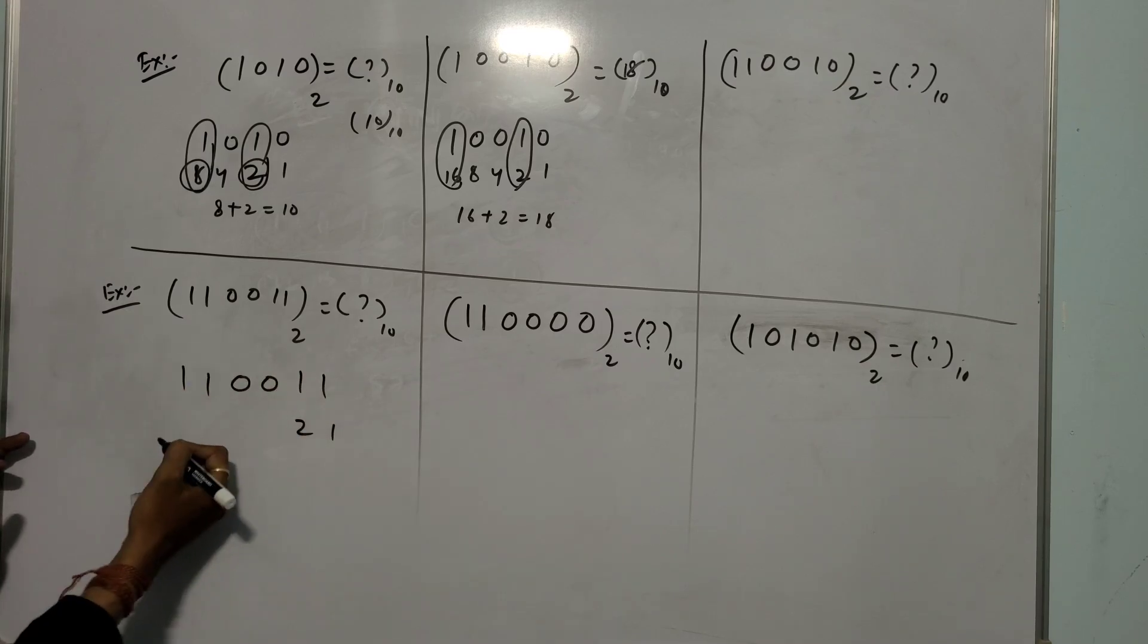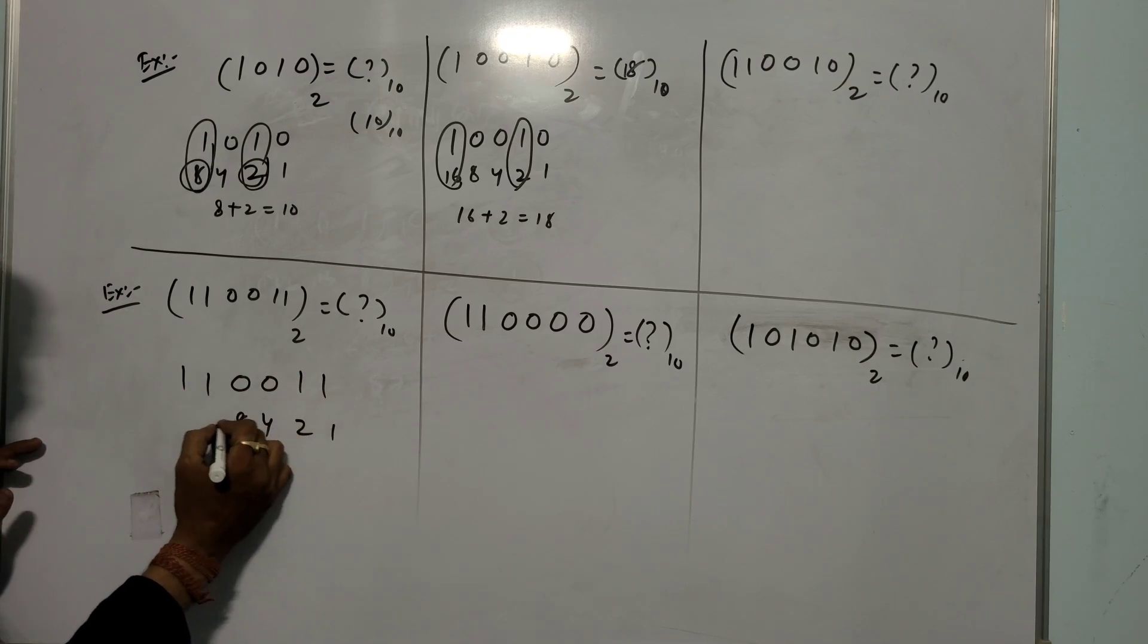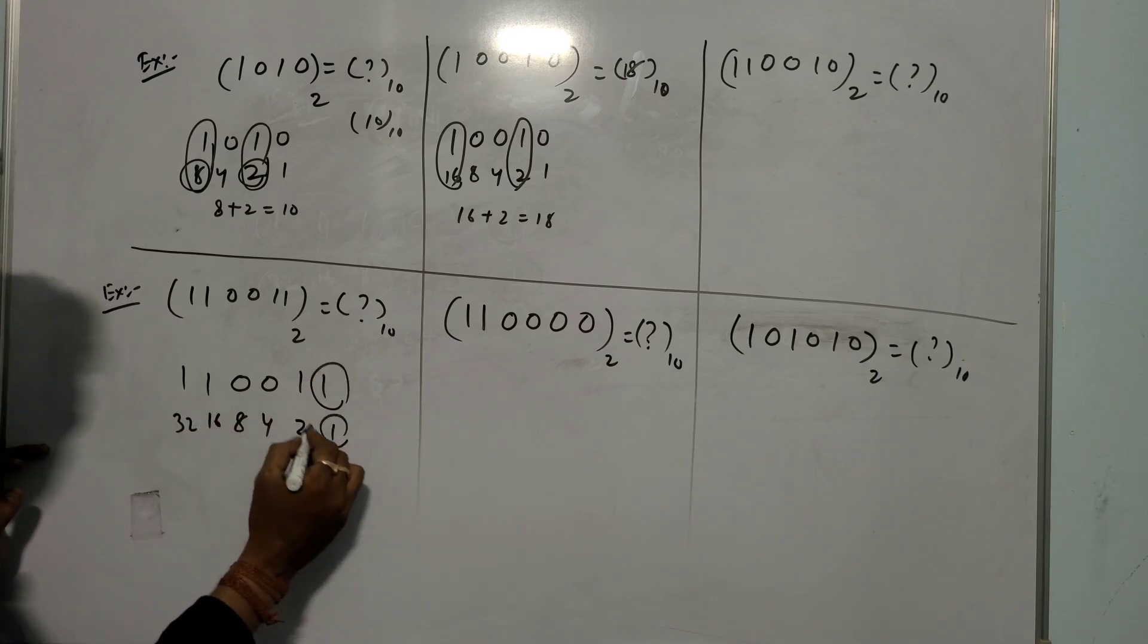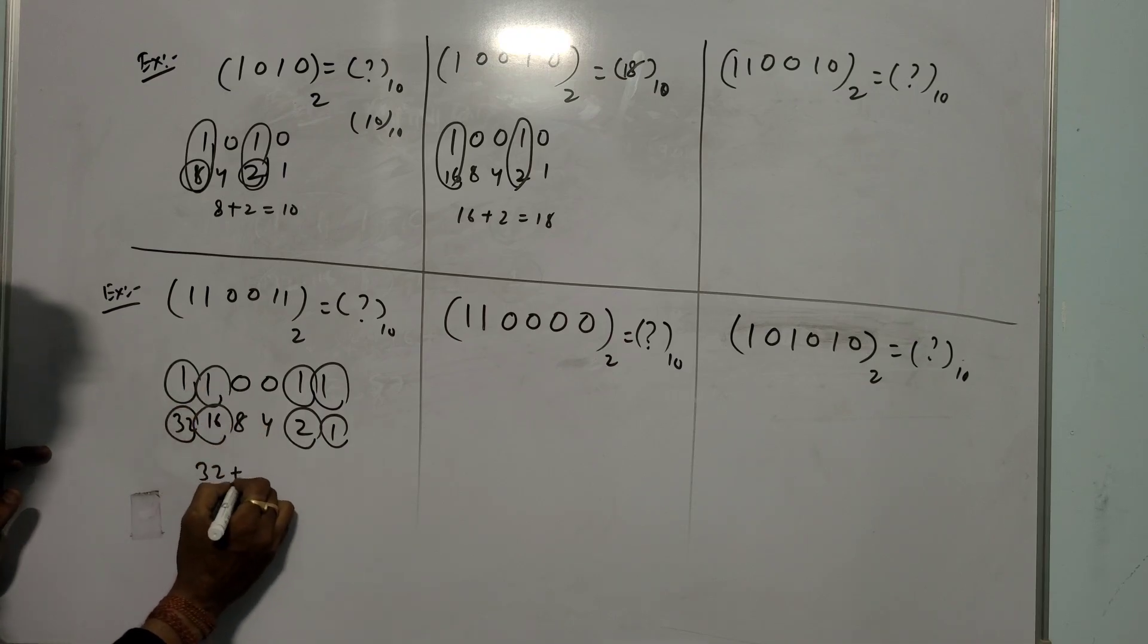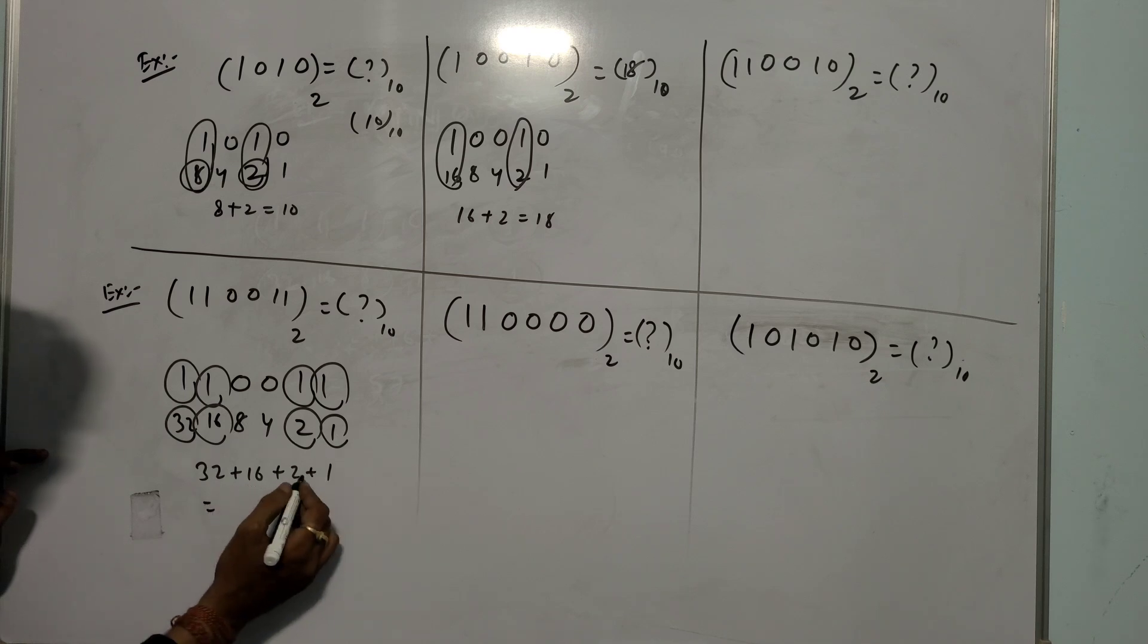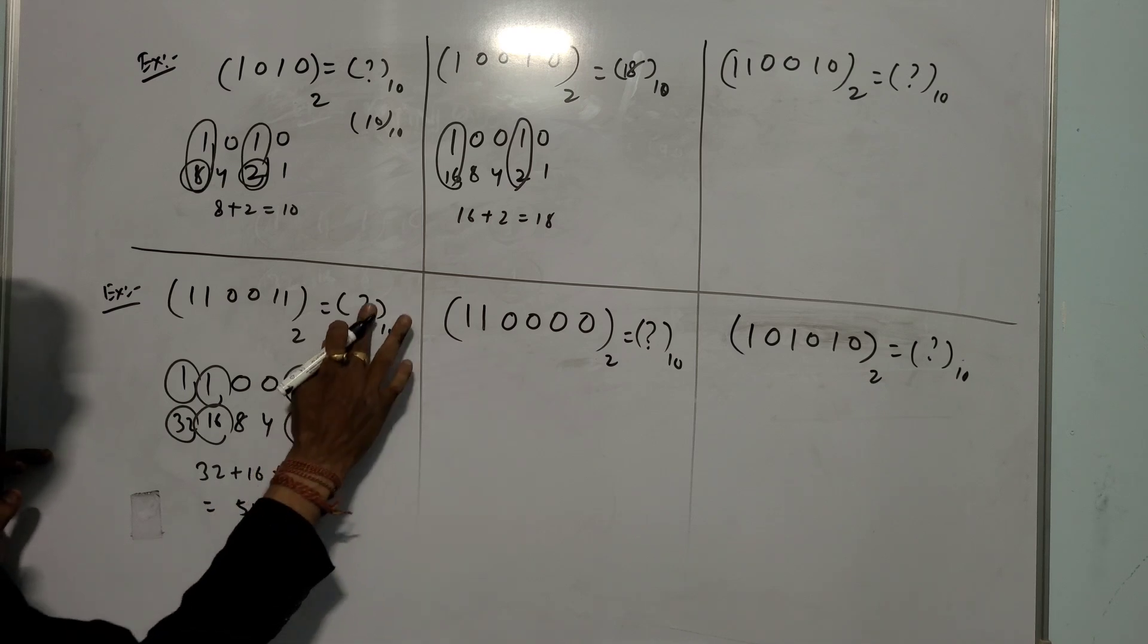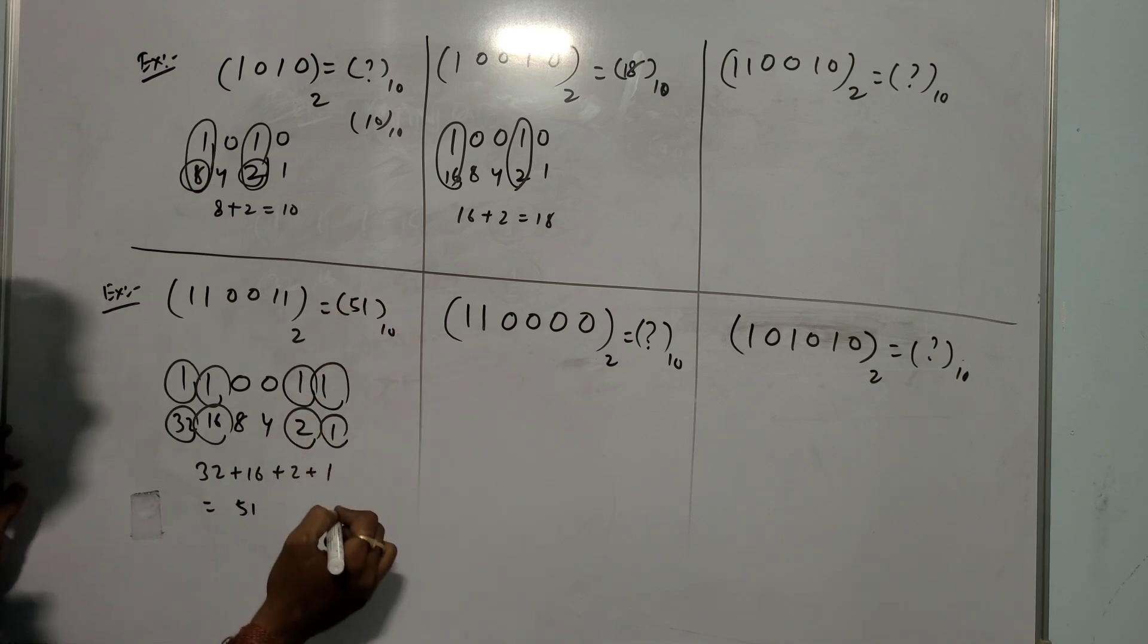See this one: 110011. You take from right hand side 1, 2, 4, 8, 16, and 32. And you take this value, this one, this one. 32 plus 16 plus 2 plus 1. 32, 16 is 48, plus 2 is 50, and 51. So answer is 51.